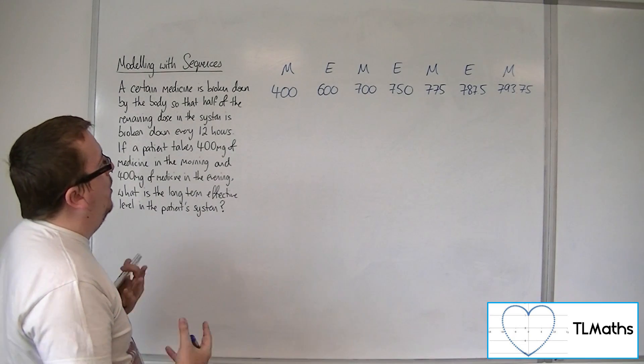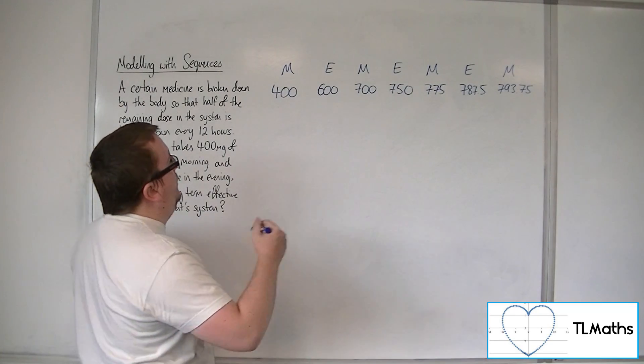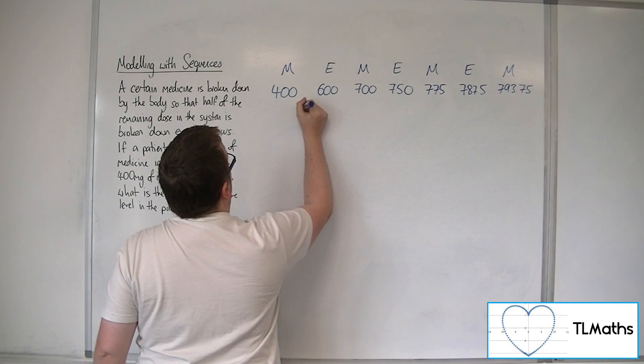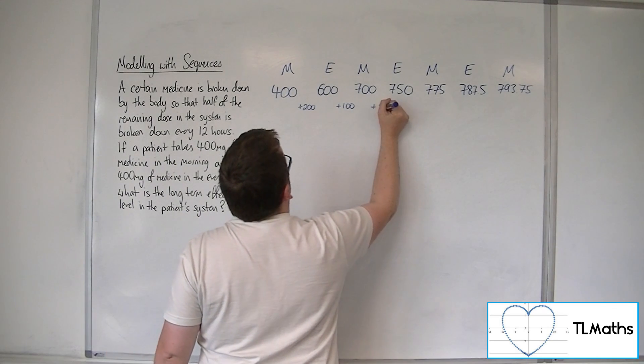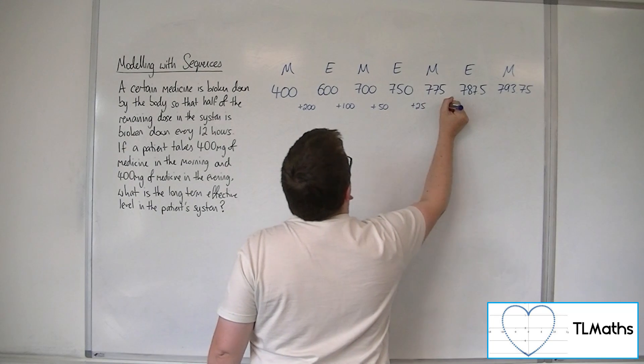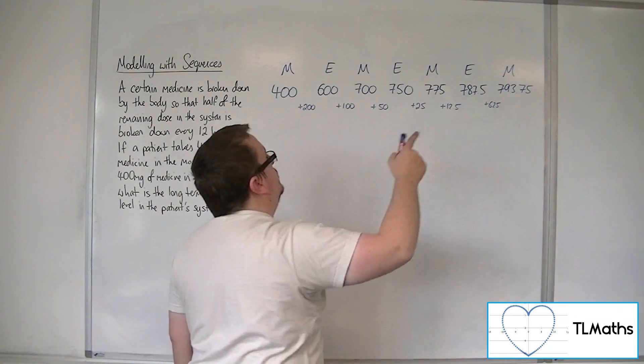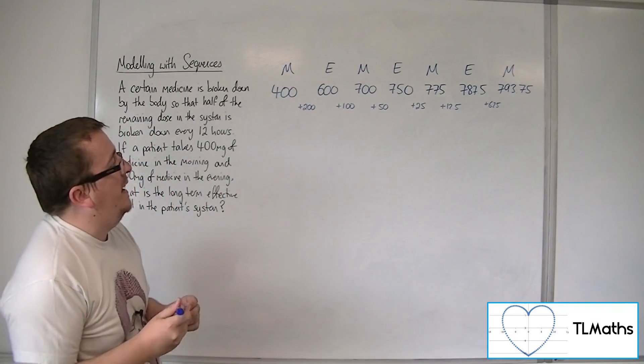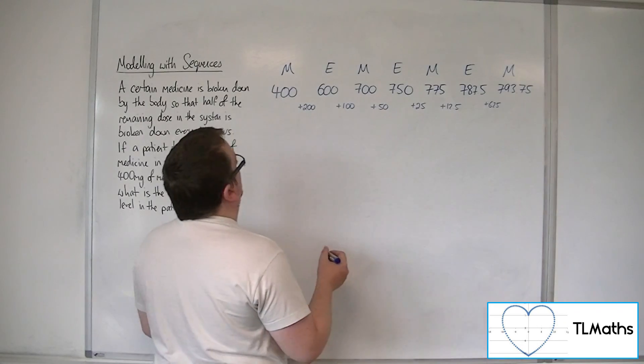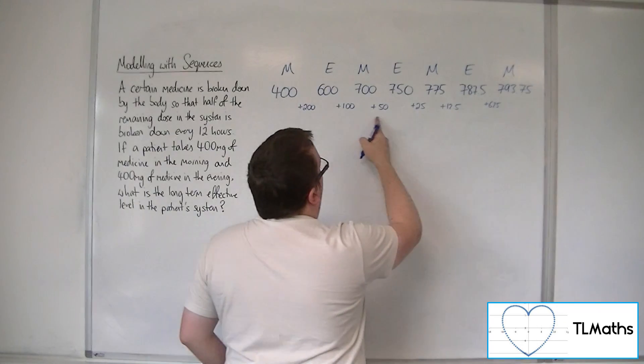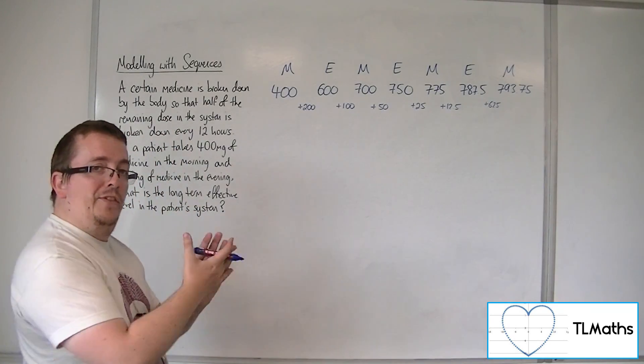Now, what's happening? Well, what we're adding on each time is decreasing. So, if you have a look at this, we've got adding on 200, then we're adding on 100, then we're adding on 50, then we're adding on 25, then 12.5, then 6.25. So, the actual amount that's being added on is getting halved each time, okay? So, you could say that we're starting off with this 400, but you could look at that 200, 100, 50, 25, 12.5, 6.25 as the actual series, okay?